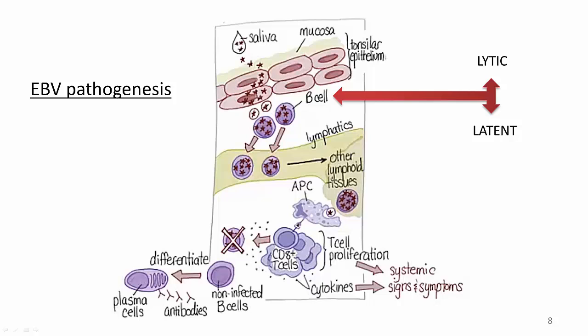Yet others encode proteins with structural roles or that help to evade the immune system. At the end of the lytic phase, the cell is able to release newly replicated viruses, which can then enter other non-infected B cells. These cells, in turn, can then enter the lymphatic circulation and spread the virus to other lymphoid tissues. EBV can also induce an infected B cell to enter the so-called latent phase, which involves the synthesis of different proteins that transform it into a cell with potentially unlimited growth potential. We will discuss viral latency in further detail in a subsequent video.